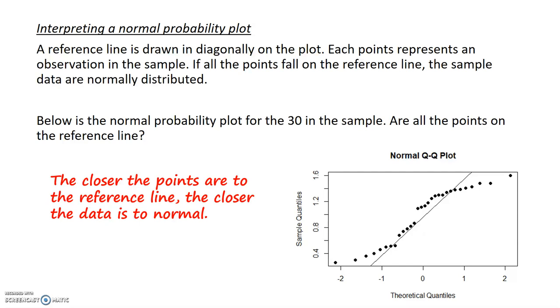Because my sample size is 30, I'm not going to worry too much. I'm going to say that my sampling distribution is probably normal, which means I can use T methods.